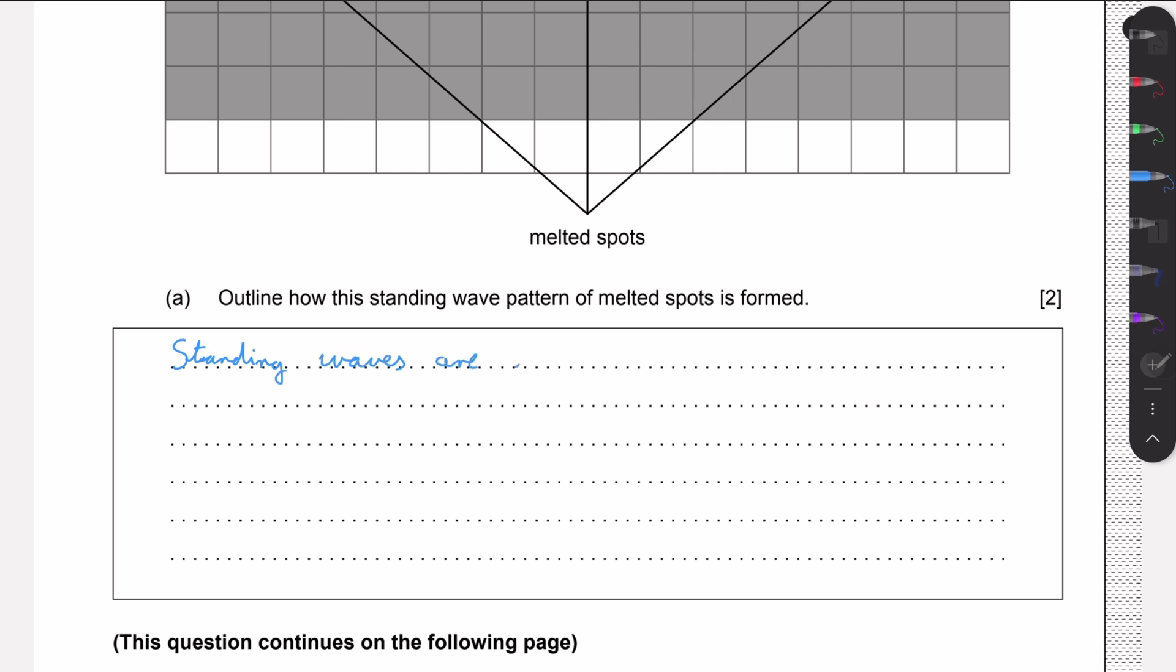So standing waves are formed by the constructive interference of waves. This is something you should just remember - this comes up quite often in exams. Sometimes you need to write this down.